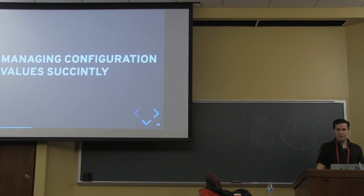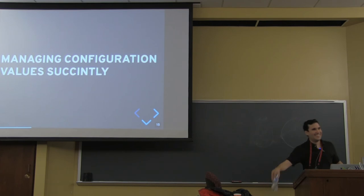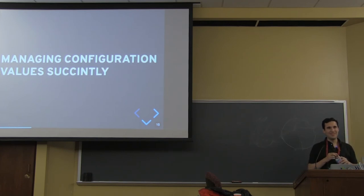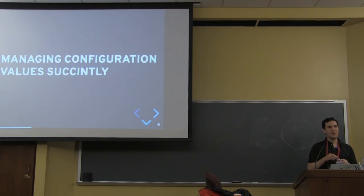Let's go with managing configuration values succinctly. What are the things you hate most about configuration in production systems? One answer: a character out of place and everything goes to hell — because they're untyped. When you say one character, it doesn't matter where — on the value or elsewhere. Things like fragmentation and format differences, people reinventing their own DSLs for configuration.